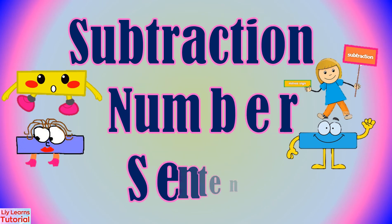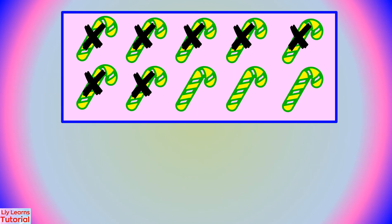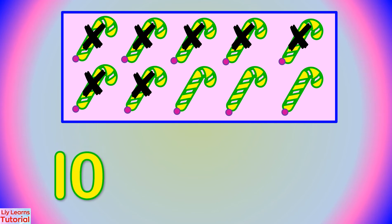Now let's write a subtraction number sentence. Count the objects: 1, 2, 3, 4, 5, 6, 7, 8, 9, 10. That is the minuend. We write 10.